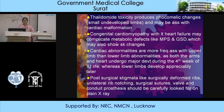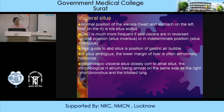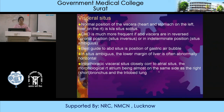Visceral situs: the normal position of the viscera — heart and stomach on the left, liver on the right — is known as situs solitus. Congenital heart disease is much more frequent if abdominal viscera are in reverse position (situs inversus) or in indeterminate position (situs ambiguus). The best guide to abdominal situs is the position of the gastric air bubble. In situs ambiguus, the lower margin of the liver is often abnormally horizontal. Intrathoracic visceral situs closely corresponds to atrial situs — the morphological right atrium is almost on the same side as the right short bronchus and the trilobed lung.